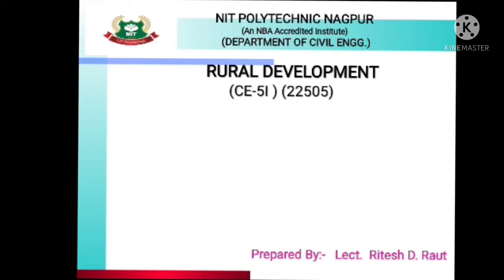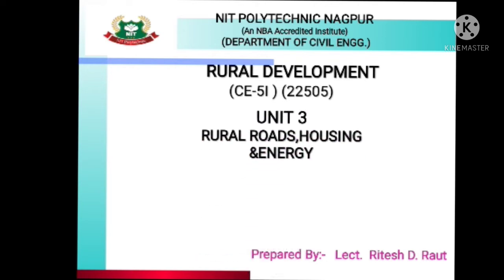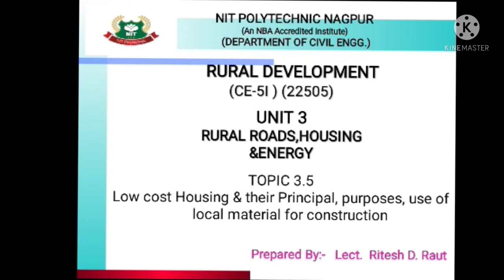Good morning. My name is Ritesh Raut. Our subject name is Rural Development, subject code is 22505. We will see Unit 3: Rural Roads, Housing and Energy. Our topic is 3.5 Low Cost Housing and their Principle Purpose – Use of Local Material for Construction.